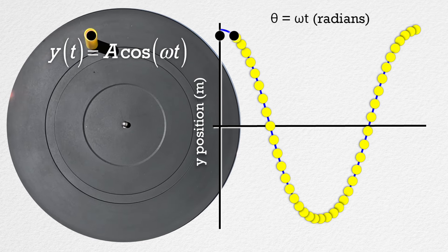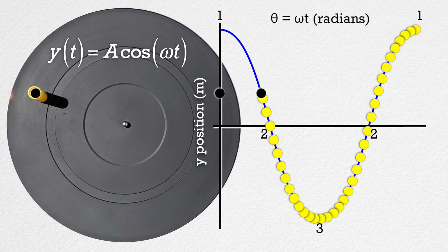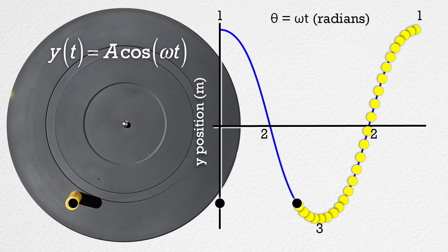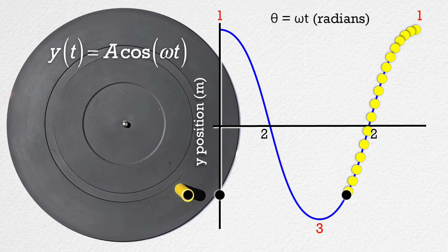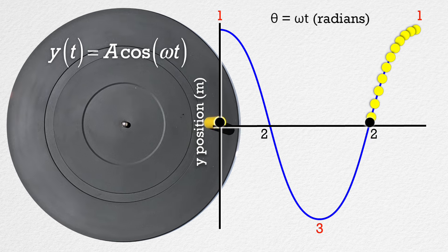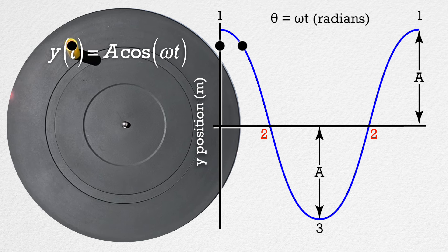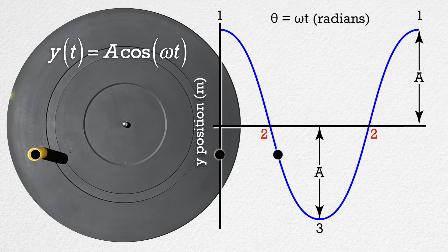Now let's look at where our three simple harmonic motion positions are on the graph. Positions 1 and 3 are at the maximum magnitude displacements from rest position, which means their distance from equilibrium position equals amplitude. And position 2 is at rest position, which you can also see on the graph.